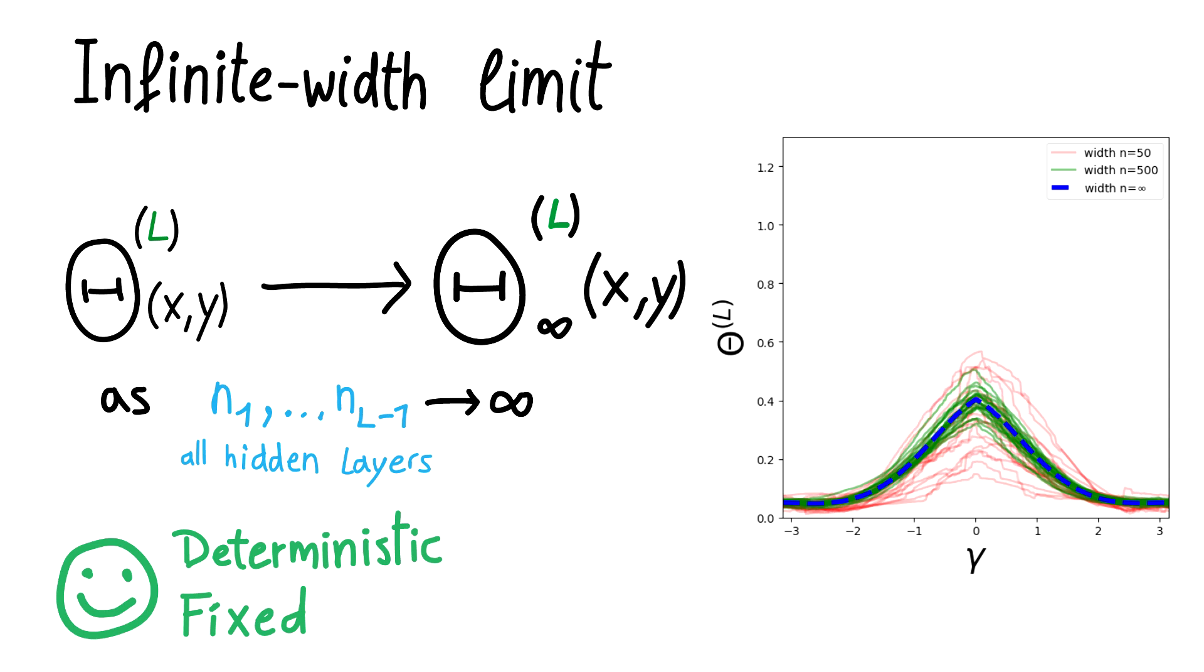This explains why the effect of one step of gradient descent was so similar for different initializations. We now have all the tools to fully describe the behavior of the network function during training.